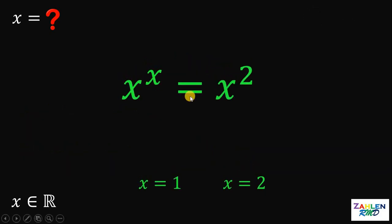We have x raised to x equals x squared. What will happen if x equals 1? Let's replace all x with 1. We have 1 raised to 1 equals 1 squared.